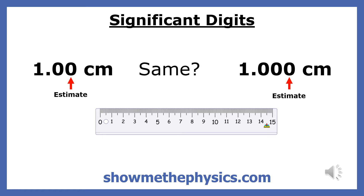The last digit in your measurement is always an estimate. The significant digits in a measurement are all the digits in your measurement that you are certain of, plus your estimate. The first measurement has three significant digits, and the second one has four.